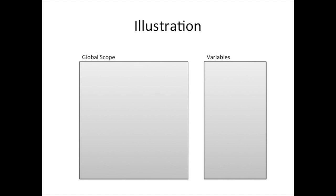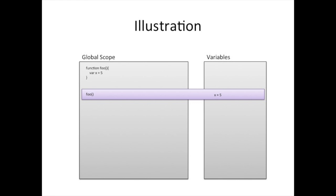So let's get into closures. In my global scope I'm going to define a function called foo — the function is pretty simple. A function introduces its own scope, so when foo runs it creates a variable called x and assigns it the value five. The variable is not created until you actually run the function. This purple area represents the scope of that function call, where x gets defined as five. So far, nothing magical.